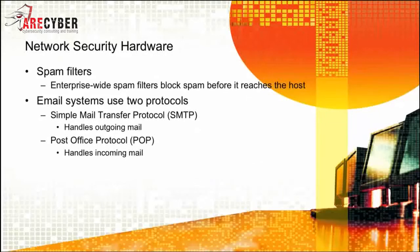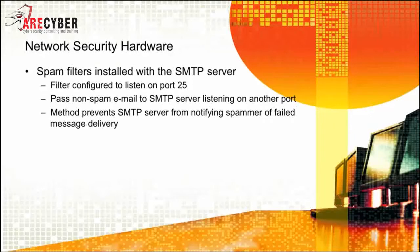Next, we have spam filters. Email systems use two basic protocols: SMTP, or Simple Mail Transfer Protocol, which handles outgoing mail, and the Post Office Protocol, or POP. Spam filters installed with the SMTP server are configured to listen on port 25, then pass non-spam email to SMTP servers listening on another port. This method prevents SMTP servers from notifying a spammer of a failed message delivery.